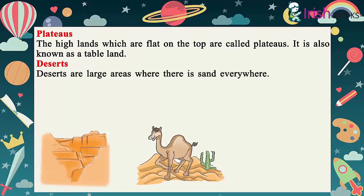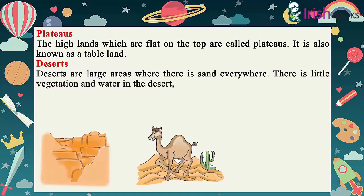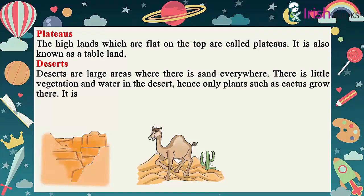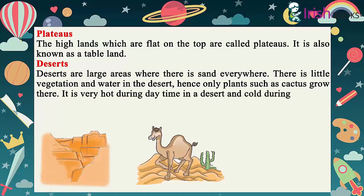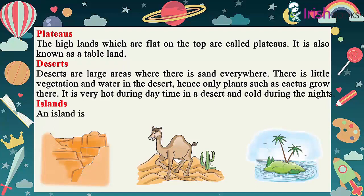Deserts are large areas where there is sand everywhere. There is little vegetation and water in the desert. Hence, only plants such as cactus grow there. It is very hot during daytime in a desert and cold during the nights.